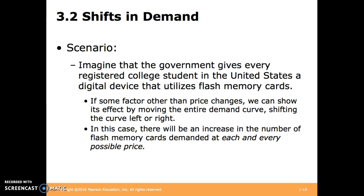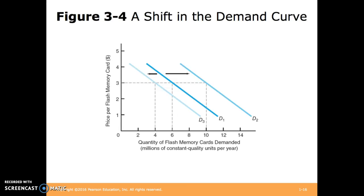When considering shifts in demand, imagine the government gives every registered college student in the United States a digital device that utilizes flash memory cards. If something other than price changes, we can shift the demand curve outward or inward. In this case, there will be an increase in the number of flash memory cards demanded at each and every possible price, so the curve shifts to the right. From D1 to D2 represents an increase in demand; from D1 to D3 represents a decrease in demand.